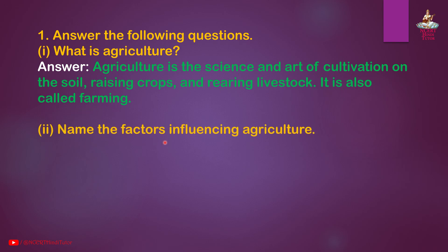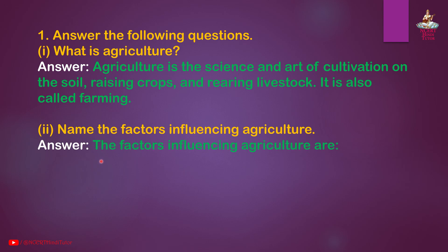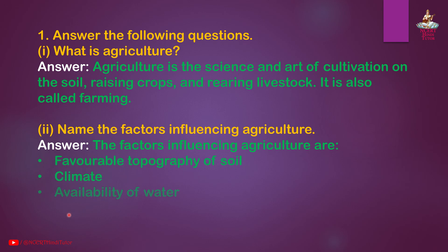Question 2: Name the factors influencing agriculture. Answer: The factors influencing agriculture are favorable topography of soil, climate, availability of water, labor, and technology.